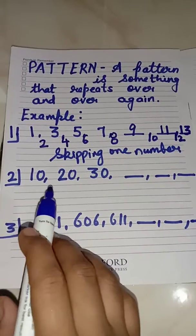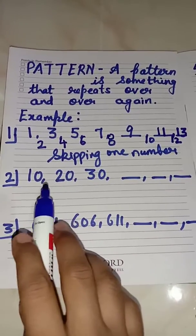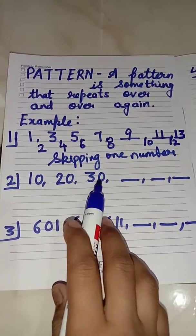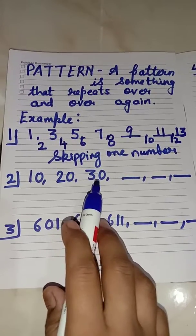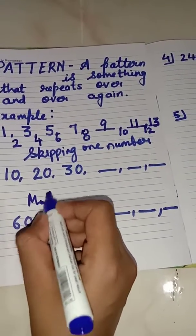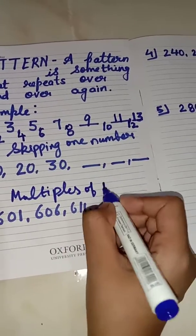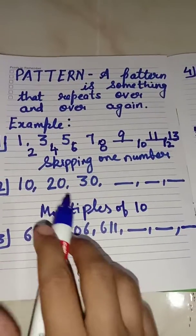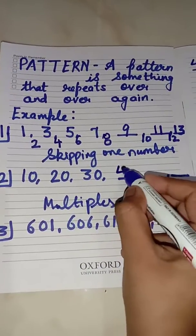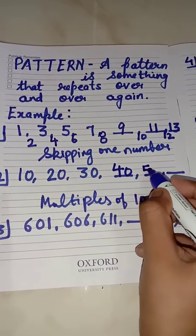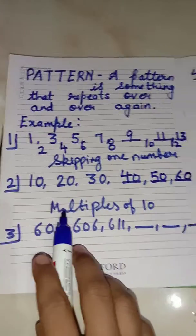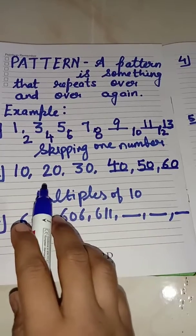Now come to the next question and look at it carefully to find out which pattern is falling here: 10, 20, 30. These all are the multiples of 10, or the table of 10. What comes after 30? 40, then 50, and then 60. So these all are the multiples of 10 or table of 10.